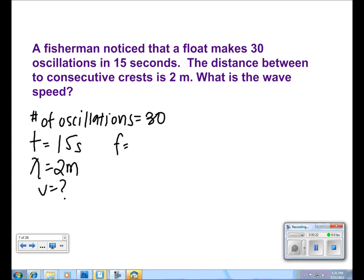We begin by finding frequency, which is equal to the number of oscillations over our time T. This equals 30 over 15, or 2 Hz.